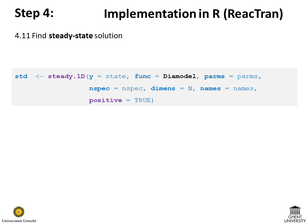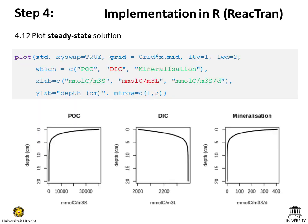Once the model function, model parameters, and initial values of the state variables have been specified, the steady-state solution is found using the steady1d function from the reactran package. An important parameter called positive (POS) should be set to TRUE to force the solver to only find positive solutions, since state variables representing concentrations cannot be negative. After the solution is found, it can be easily plotted using the plot function, where we can specify how graphs look — for example, swapping the x and y axes, or specifying which output variables to display.